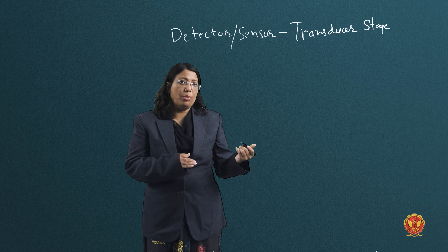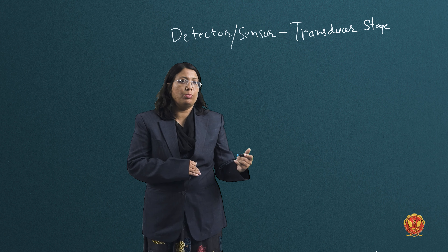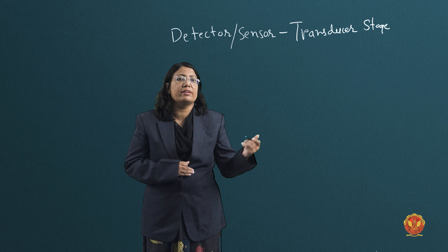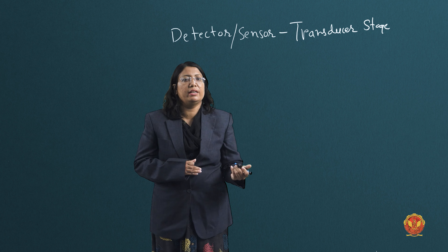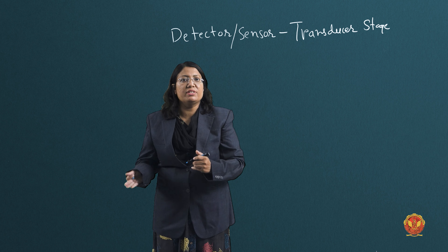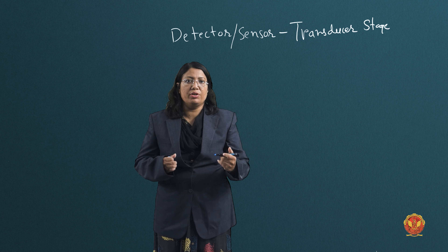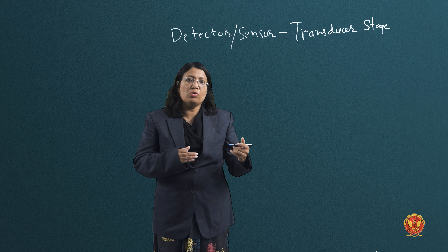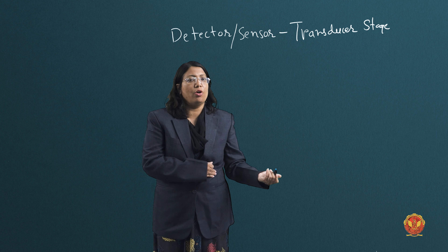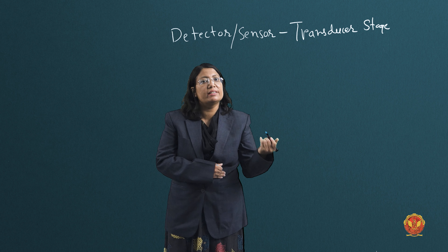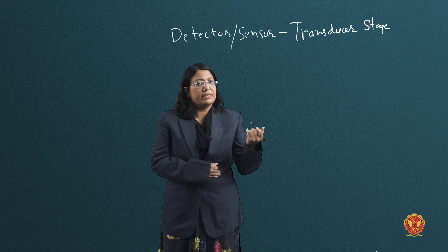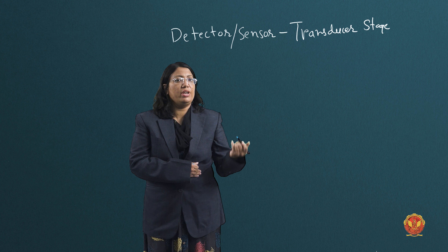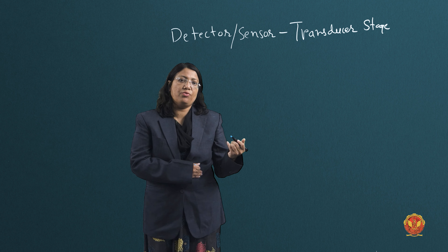If the output is converted into electrical form, then we call it an electrical transducer. An electrical transducer takes any physical quantity at its input and converts it to an electrical output. So an electrical transducer is an electronic device which converts one form of energy to electrical form.